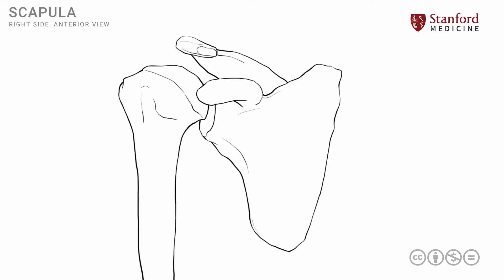We will focus on the proximal humerus and put some important bony landmarks here. The first one is a bony bump known as the greater tuberosity or greater tubercle. Slightly medial to this and slightly smaller, there's another bony bump known as the lesser tuberosity or lesser tubercle. In between these two tuberosities is the intertubercular groove, which runs in a superior to inferior direction.